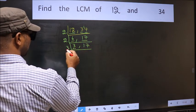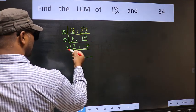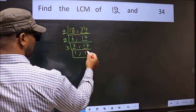Now, here we have 3. 3 is a prime number. So 3, 1 is 3. The other number 17, not divisible by 3. So we write it down as it is.